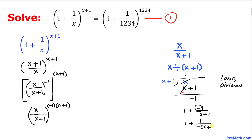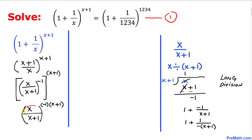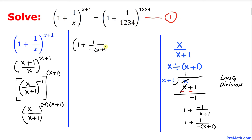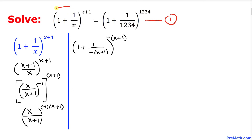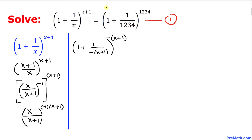We can further write it as one plus one over negative x plus one. Now I can replace the base with this expression. So we can write it as one plus one over negative x plus one, to the whole power of negative times x plus one. Now the left hand side of the equation has been transformed into this form.